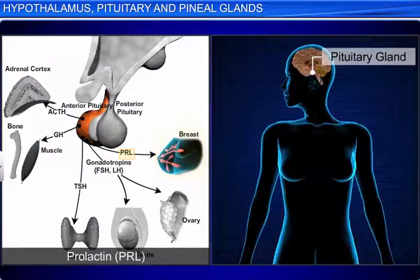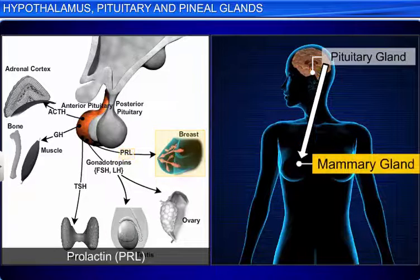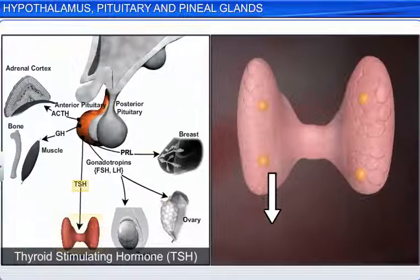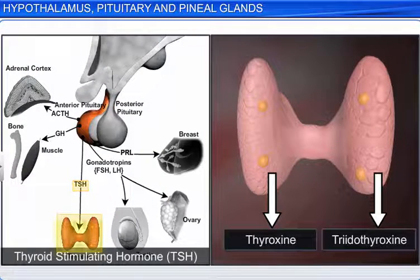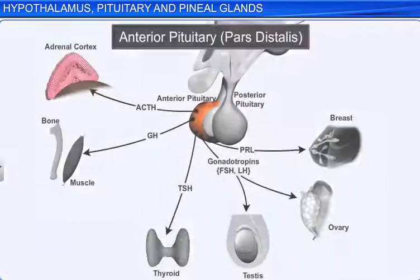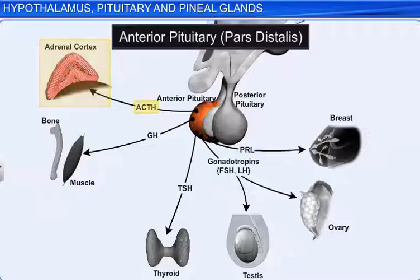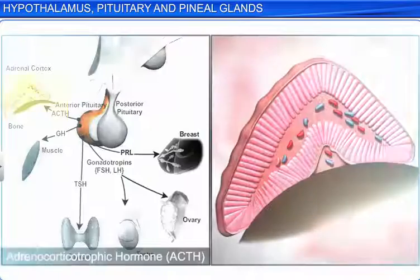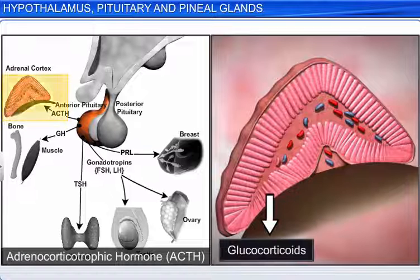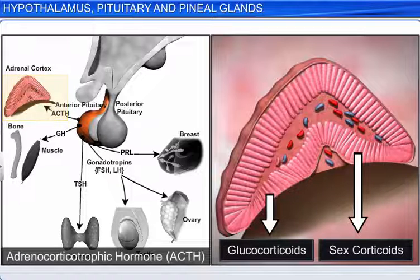Prolactin is known as the maternity hormone because it stimulates the development of the mammary glands during pregnancy and lactation after childbirth. TSH stimulates the synthesis and secretion of hormones such as thyroxin and triiodothyronine by the thyroid gland. ACTH acts on the adrenal cortex and controls the production and secretion of steroid hormones like glucocorticoids and sex corticoids.